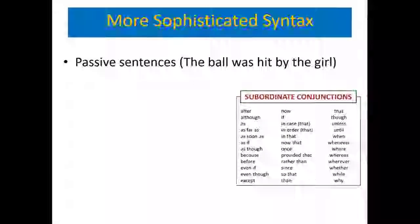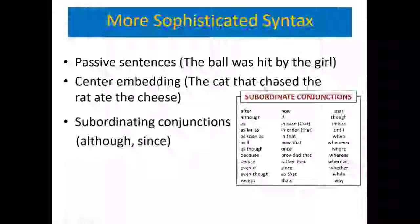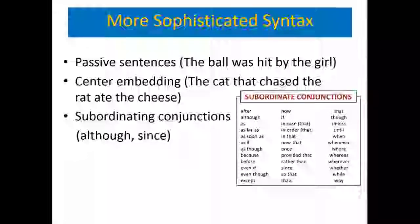Other forms of more sophisticated syntax include passive sentences, center-embedded sentences — 'the cat that chased the rat ate the cheese,' where we take 'the cat ate the cheese' and insert a whole other sentence into it — and subordinating conjunctions. There's a whole list of subordinating conjunctions we may not typically think of as conjunctions, including 'in that,' 'rather than,' 'where,' and 'until.'